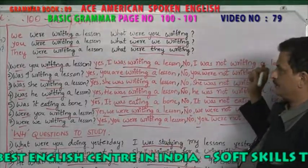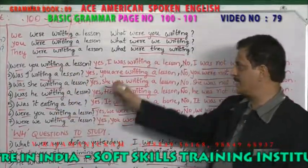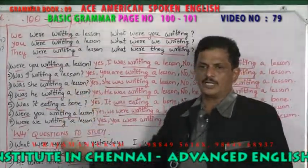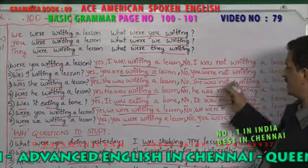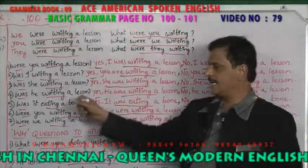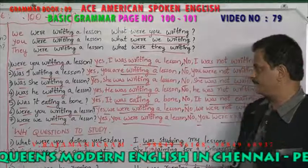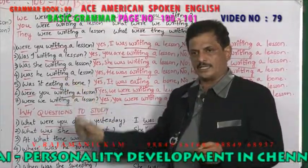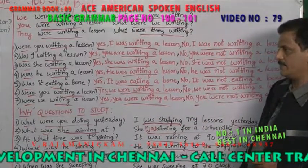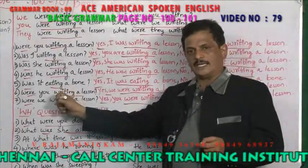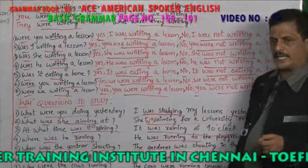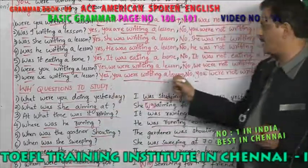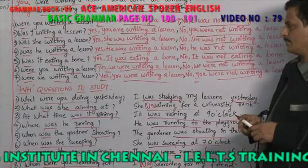Yes/no drill in past continuous: Yes, I was writing a lesson. No, I was not writing a lesson. Yes, you are writing a lesson. No, you weren't writing a lesson. Was she writing a lesson? Yes, she was writing a lesson. No, we weren't writing a lesson. No, you weren't writing a lesson.